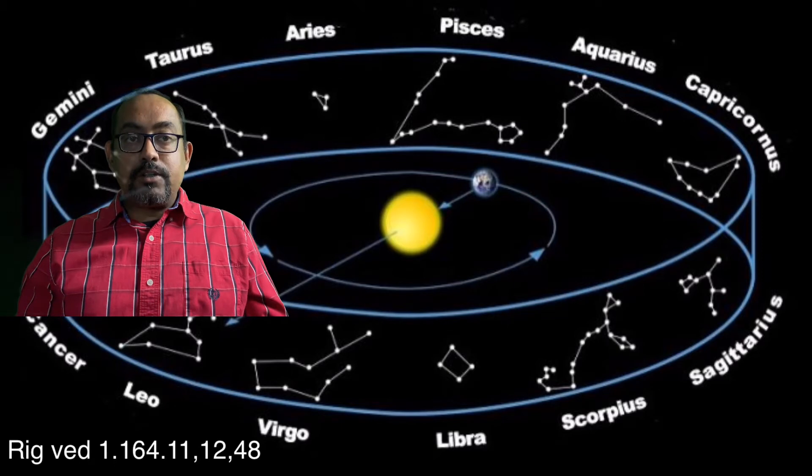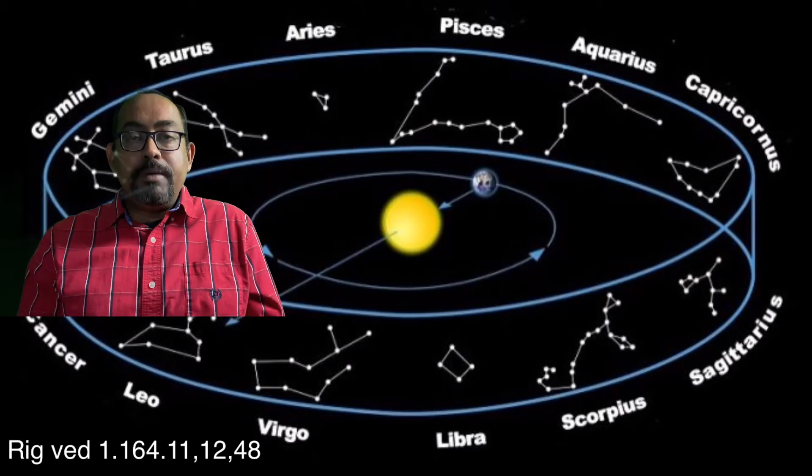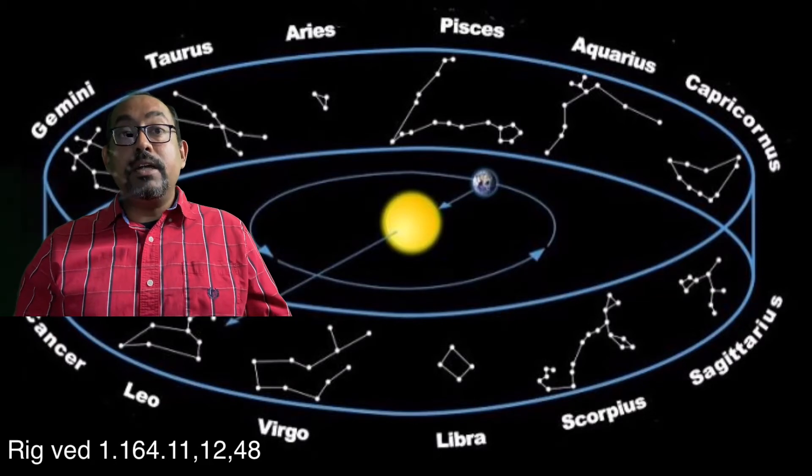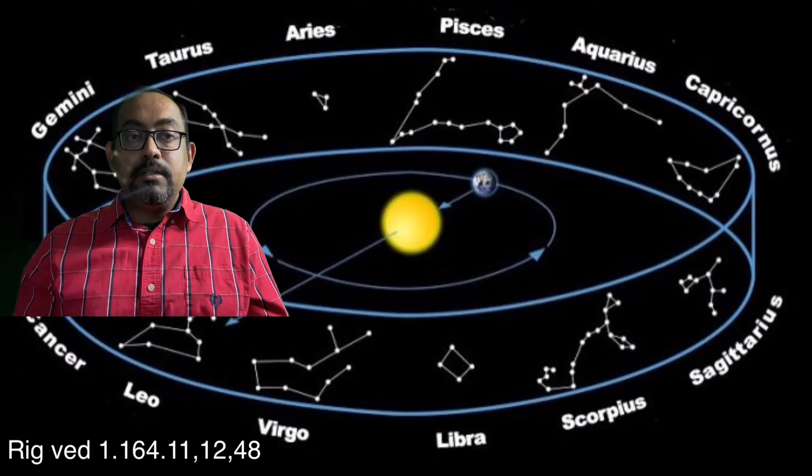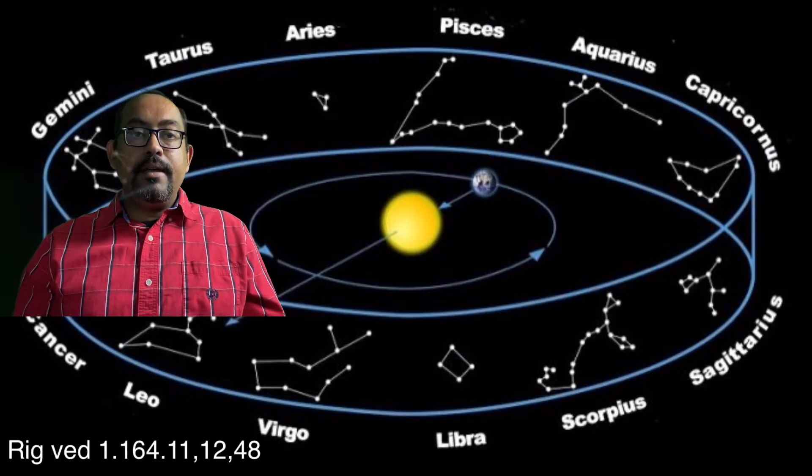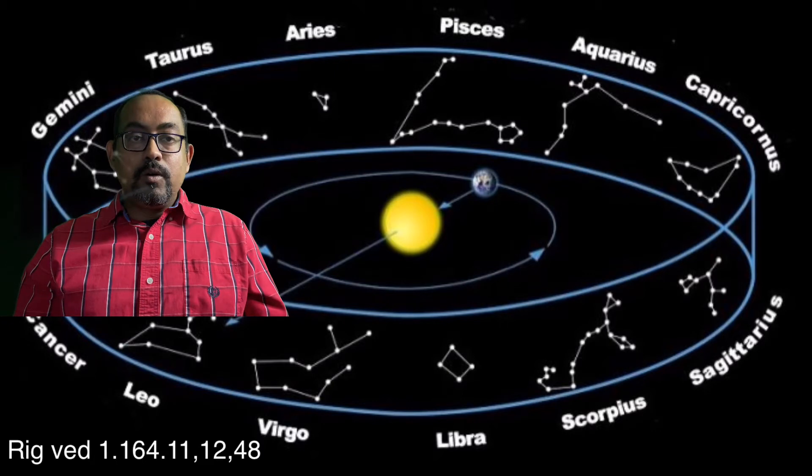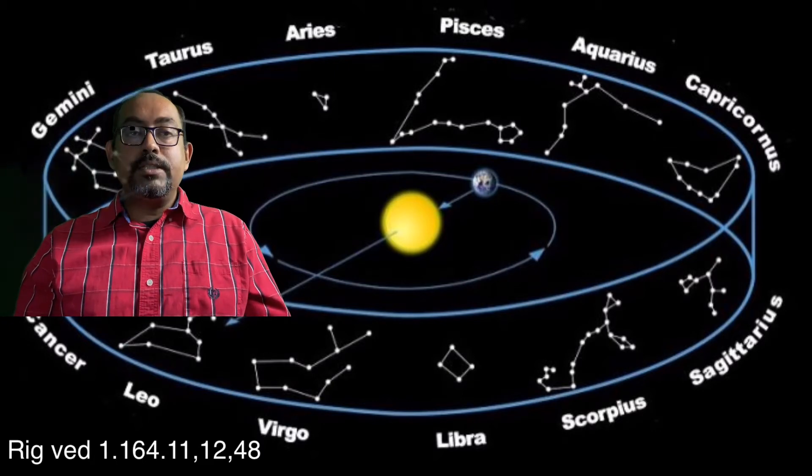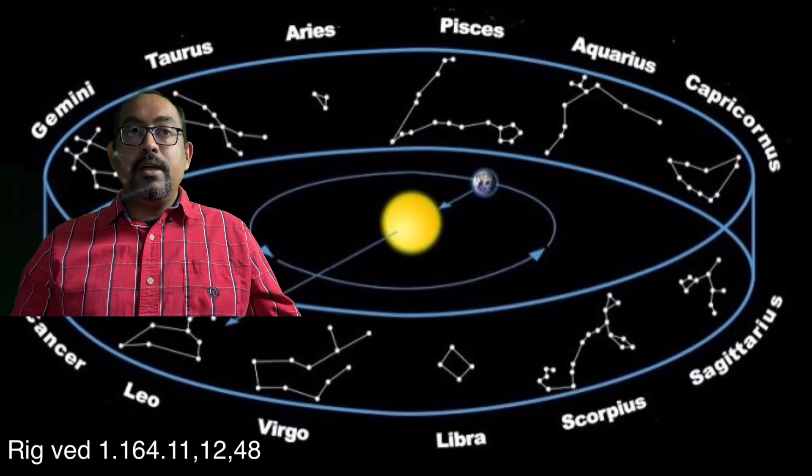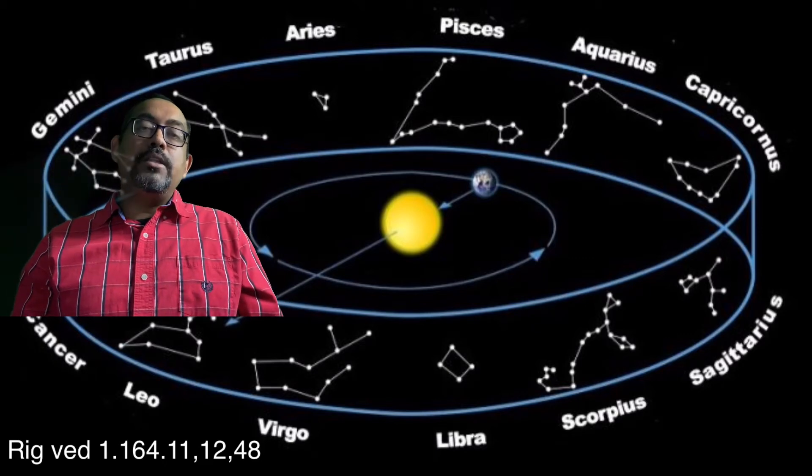Devadasa here is twelve, parayah is spoke, chakram is wheel as I have already explained, akam is one, then three nee is three navel. Kuh is an interrogative sense indicating some emphasis. Chiketa is has known, tasmin is in that, sakam is together, tristha is three hundred, na is and, shankavaha means places. Shasti is six, arpita means have been placed. Chala shaha means not shaking, not intensely shaking.